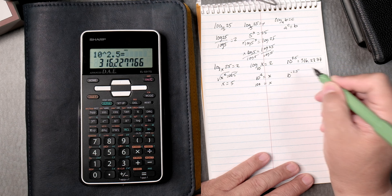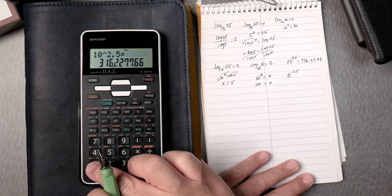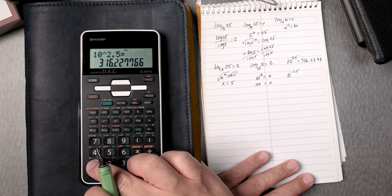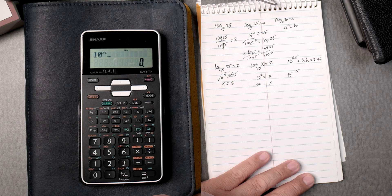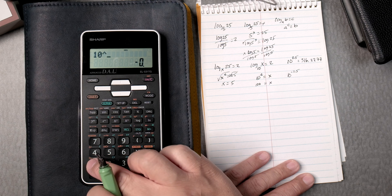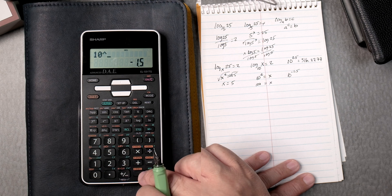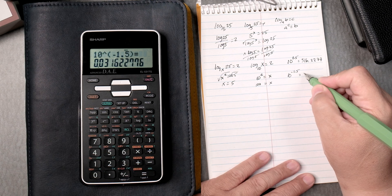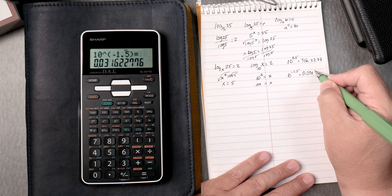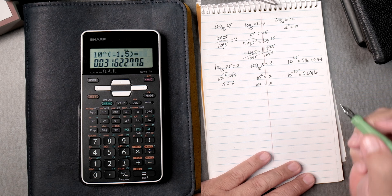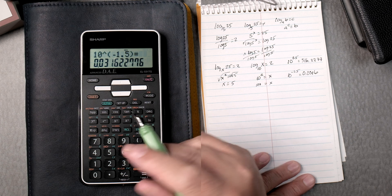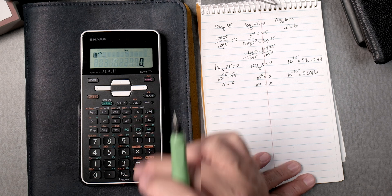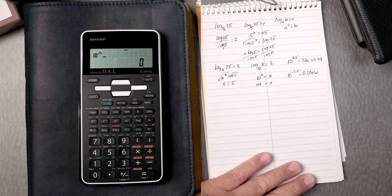10 to the minus 1.5. Again, you can type in 10, y to the x, and then negative 1.5 equals, and that's going to be 0.0316. If you look at the log key, it has an anti-log. So we can press 2nd, log key, and it gives you the same thing.